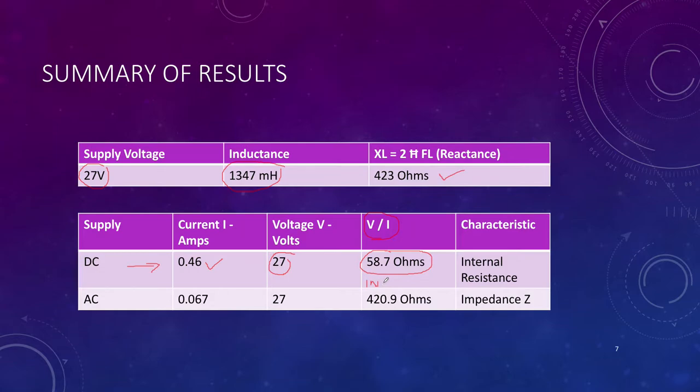This is the internal resistance of the inductor. If I put a multimeter on the inductor, I would measure about 60 ohms of internal resistance, which is what I've indicated as measured.